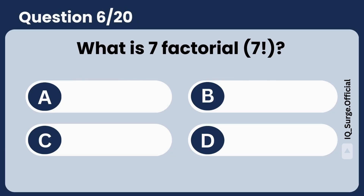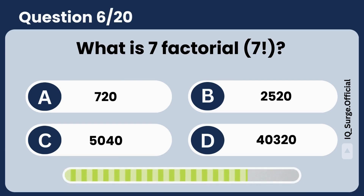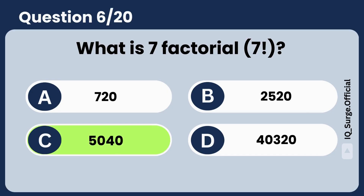What is 7 factorial? Answer: 5040. Brilliant.